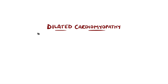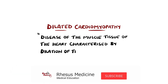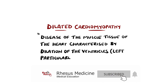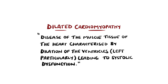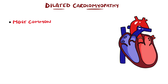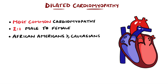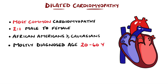Dilated cardiomyopathy is a disease of the muscle tissue of the heart, characterised by a dilation of the ventricles, particularly the left ventricle, leading to a systolic dysfunction. It is the most common form of cardiomyopathy and is seen around twice as frequently in men than in women. It is also more commonly seen in African-Americans than in Caucasian populations. Most patients are diagnosed between the ages of 20 and 60, although younger and older patients can also be affected.